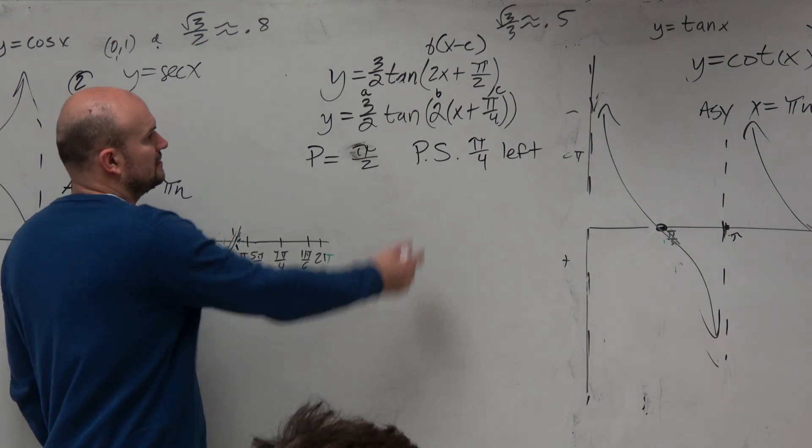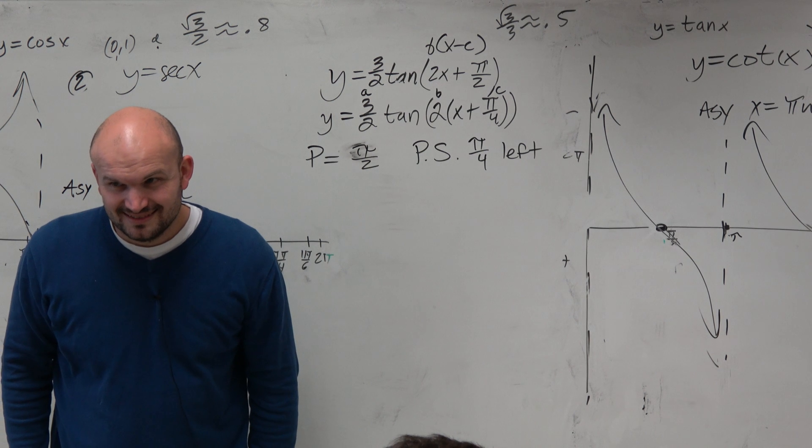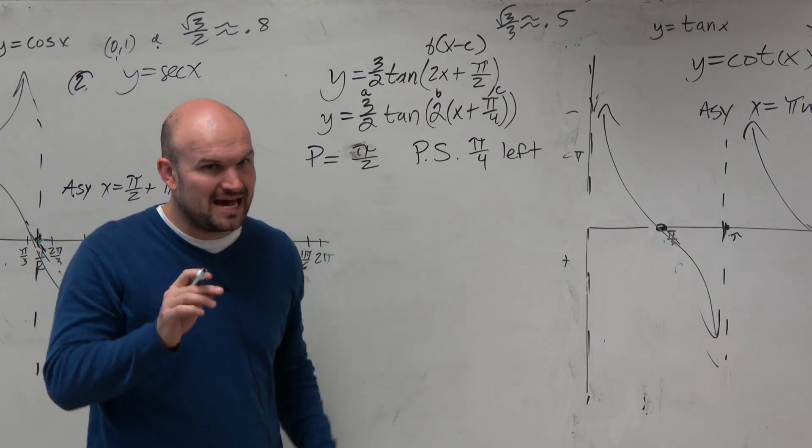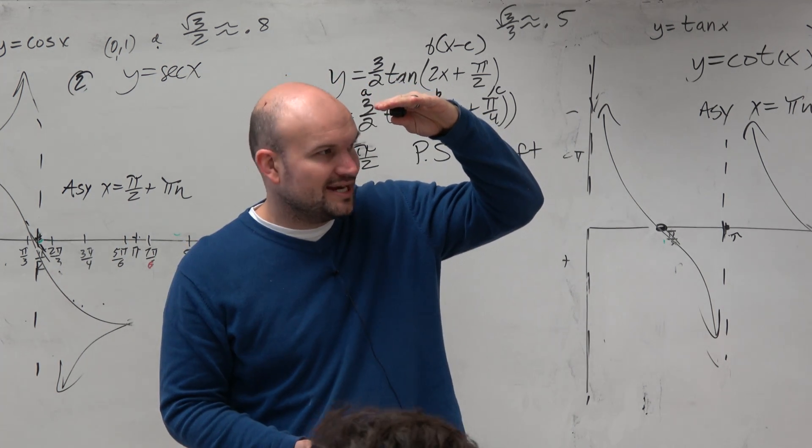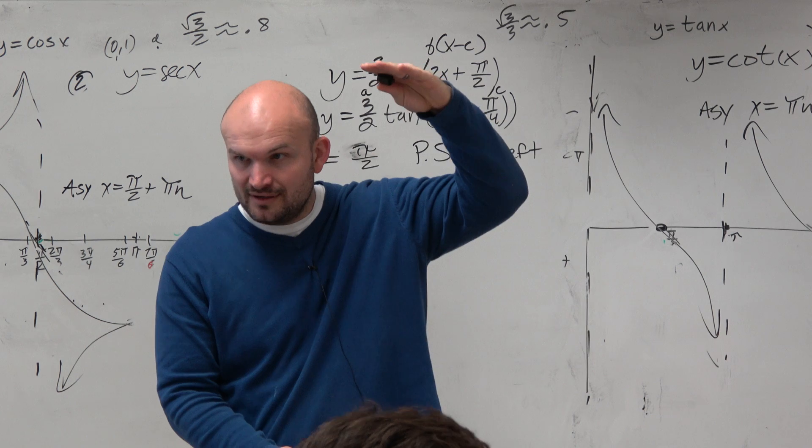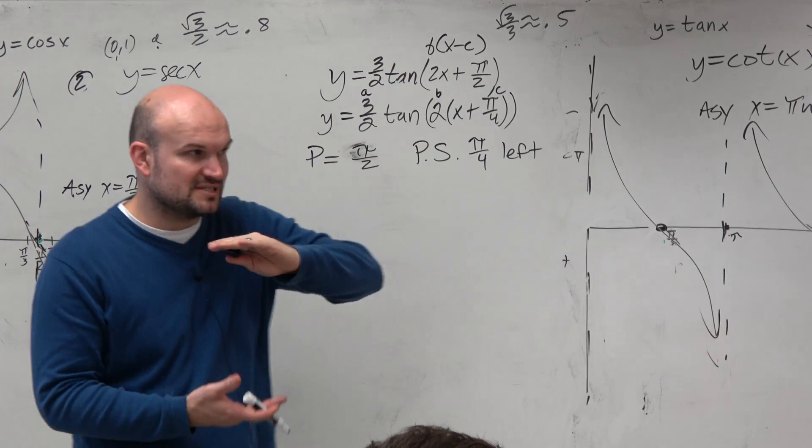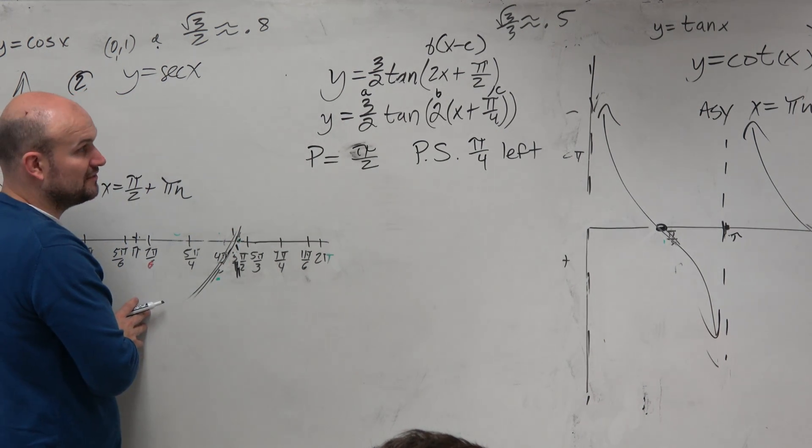And then what about this 3 halves? Is that the amplitude? Don't fall for the trap, guys. Amplitude is the half distance from the max to the min. Tangent, cotangent, cosecant, and secant do not have a max or a min. So there is no amplitude. Amplitude is only for sine and cosine. So this is everything we have here.